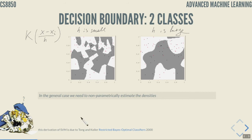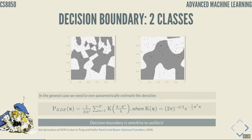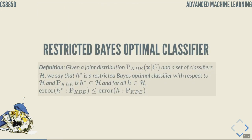When modeling our posteriors as some estimate of the true posterior, our decision boundary is sensitive to outliers — it has high variance with respect to the data. We want to avoid these arbitrary fluctuations in the decision boundary.